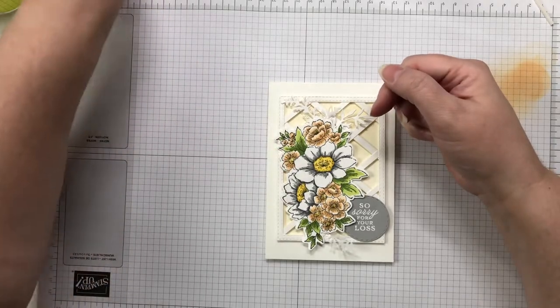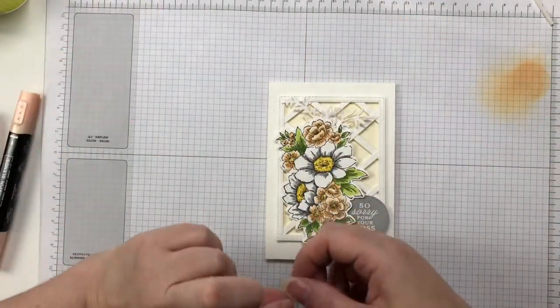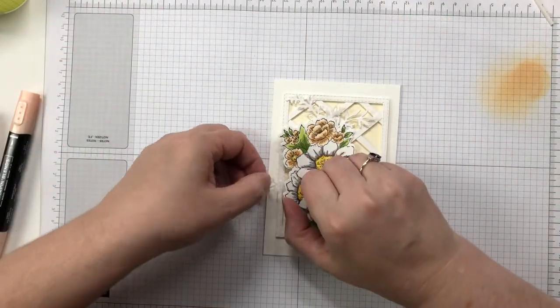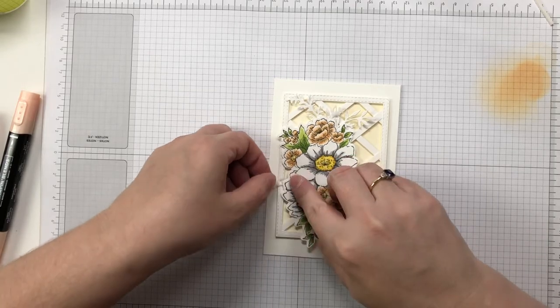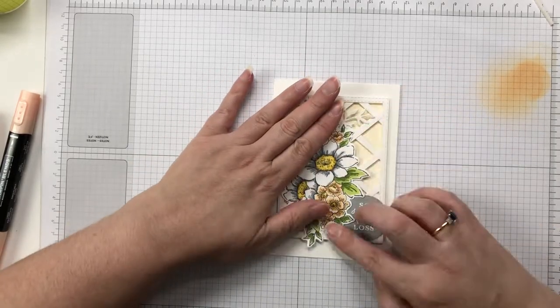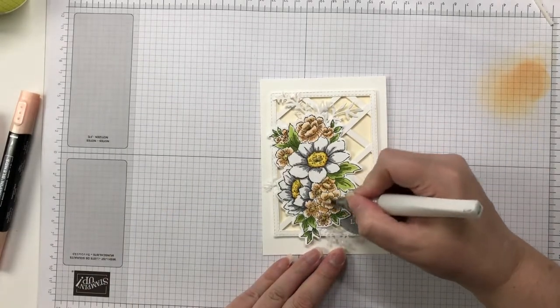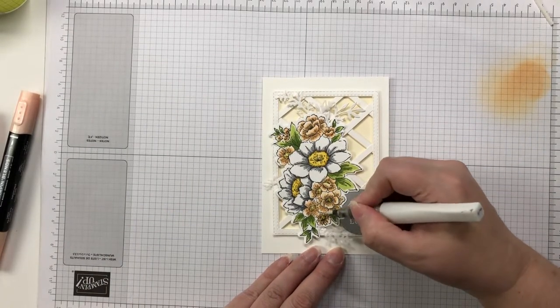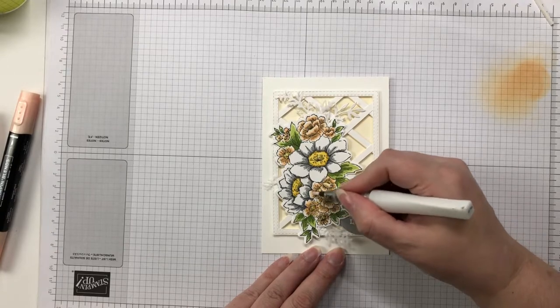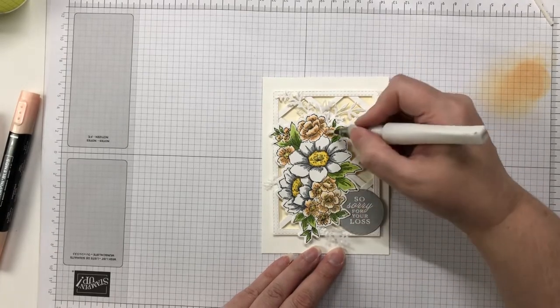And I do end up using a combination of both the basic white cardstock elements and the vellum elements. I've kind of felt that if I'd have used all basic white cardstock it just might have looked too much. The vellum's so much softer. And once I'm happy with the positioning of all of those elements I'm coming in with a Wink of Stella.